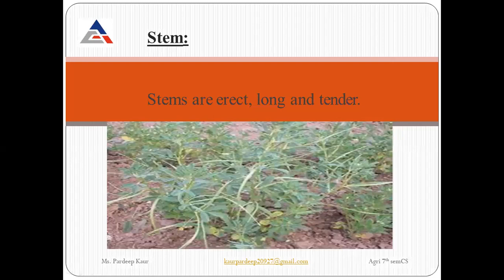Next is its stem. The stem of fenugreek is erect, long, and tender — very soft. It is green in color and has a branched, erect form.